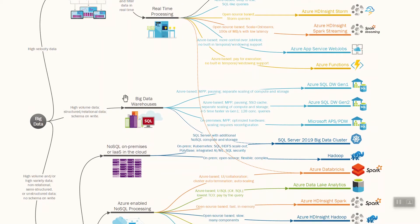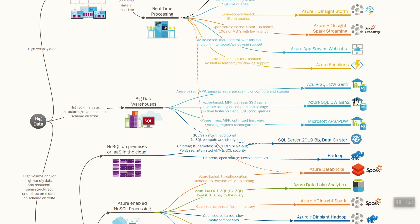Let's move to big data warehousing scenarios, where we are processing high volumes of data with massive parallel processing solutions. We have Azure SQL Data Warehouse Generation 1 and Generation 2, both using blob storage to store data. Generation 2 adds intelligent caching, which allows you to experience four to five times faster performance compared to Generation 1, along with support for up to 128 concurrent queries.